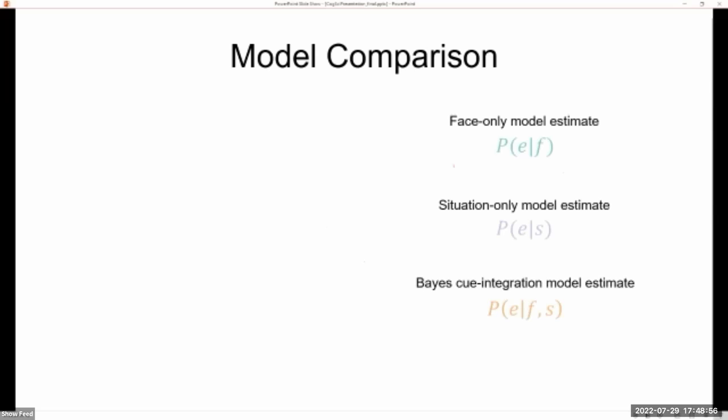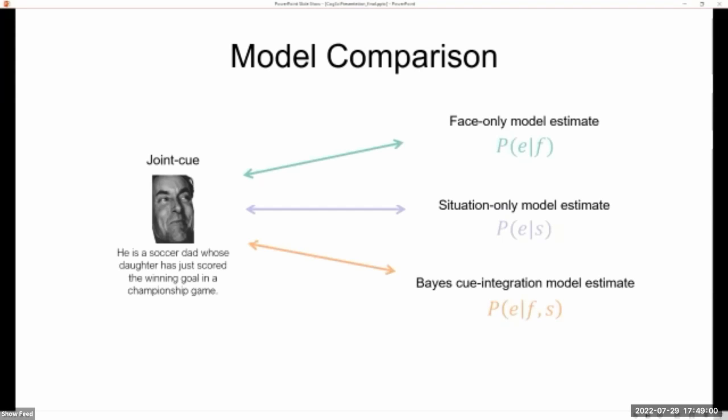Finally, we compare all of these model estimates to people's empirical judgments of emotions, given both the facial and situation cues. And this comparison basically helps to determine which set of beliefs best capture people's reasoning about inferring others' emotions.